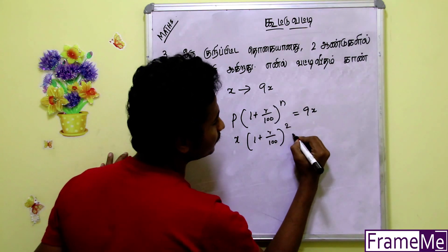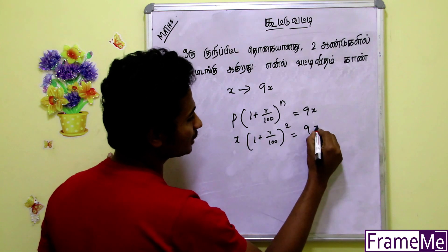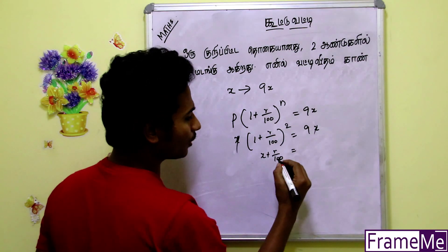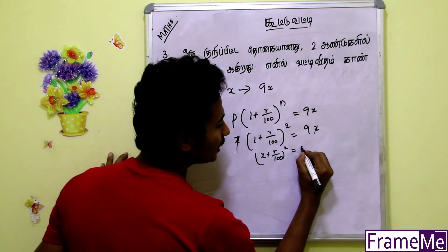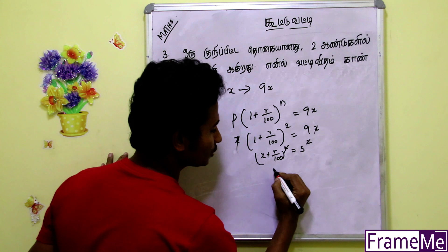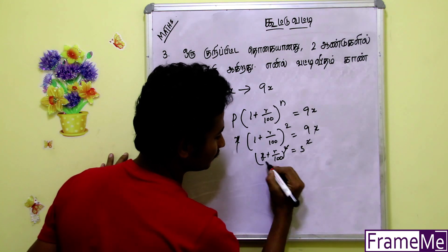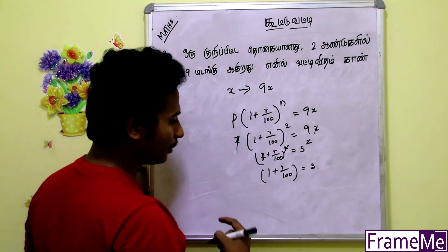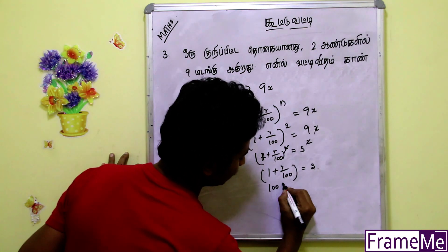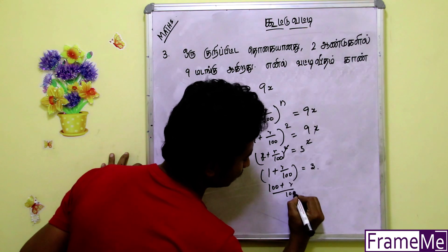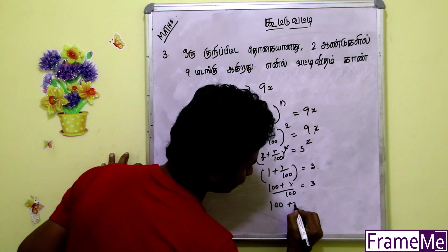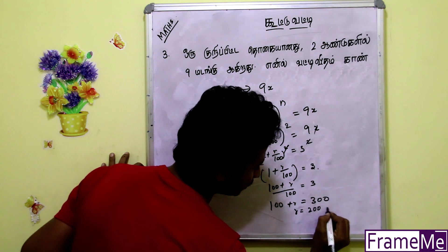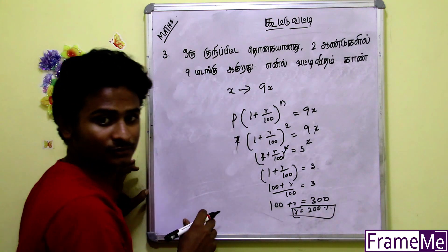This is 1 plus R by 100 whole power N. So N will be 2 into x. So the 2x will cancel. Now, 1 plus R by 100. If we do the square, we can tell you 3 square. So now the 2x will cancel. So 1 plus R by 100 whole power N. If we do the square, 100 plus R by 100 whole power N. So 100 plus R equals 300. R equals 200 whole power N.